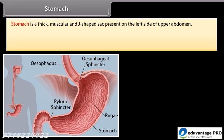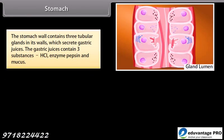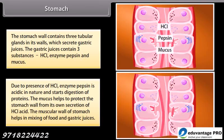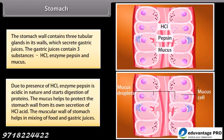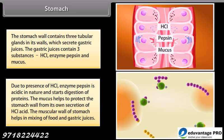The stomach is a thick, muscular, J-shaped sac present on the left side of the upper abdomen. It helps in mechanical churning and chemical digestion of food. The food is churned in the stomach for about three hours, breaking it down into smaller pieces and forming a semi-solid paste. The stomach wall contains tubular glands that secrete gastric juices containing HCl, enzyme pepsin, and mucus. HCl makes pepsin acidic to start protein digestion, while mucus protects the stomach wall from HCl acid.